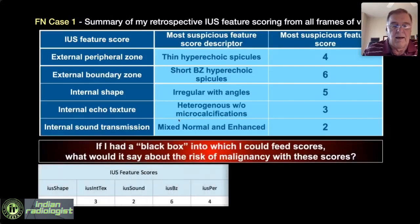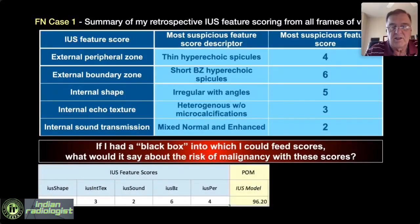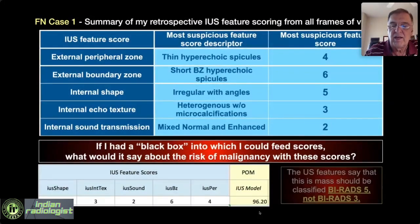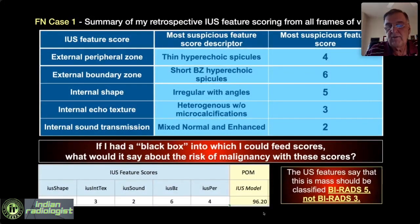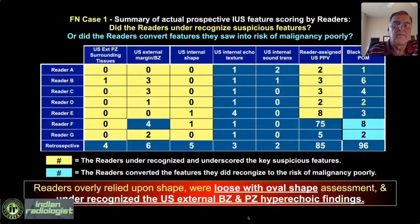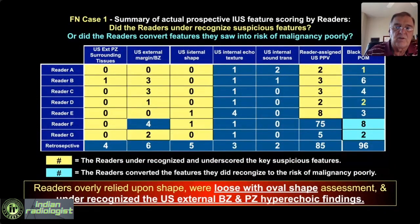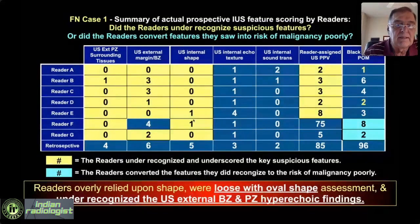If I plug this into my polynomial regression equation — where I can plug in these scores and predict the likelihood of malignancy — the likelihood of malignancy is 96%. Anything over 95% is BIRADS-5. So what was called BIRADS-3 by all the readers and myself is, in retrospect using the video and my regression equation, really a BIRADS-5. There is no way we should have called this BIRADS-3. Looking at the shape scores: 5 of the 7 readers called it flat oval, 2 called it plump oval — a gross overuse of the oval shape. I called it flat oval too, so I made the same mistake.